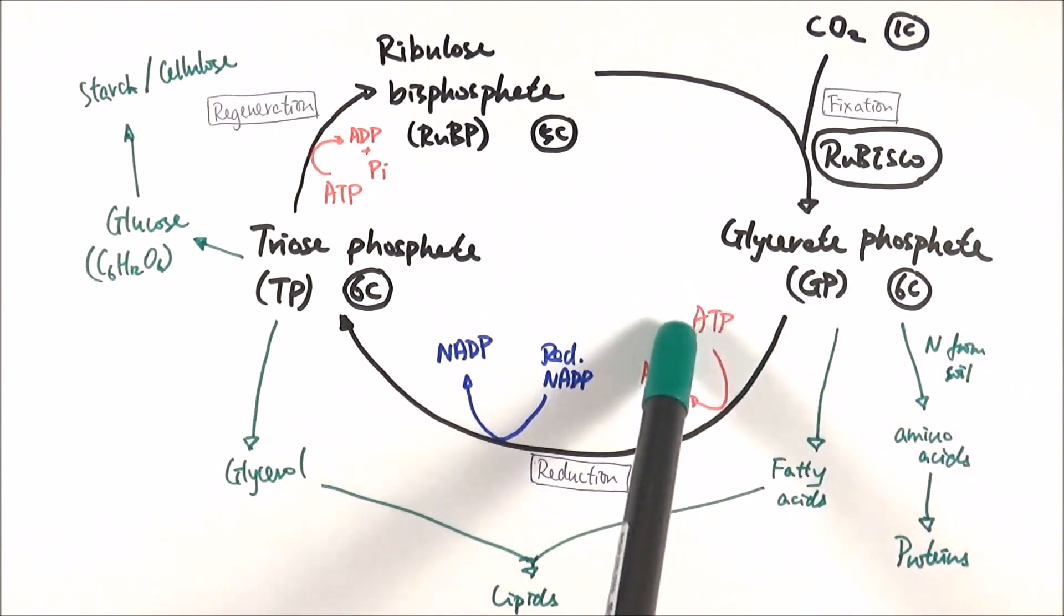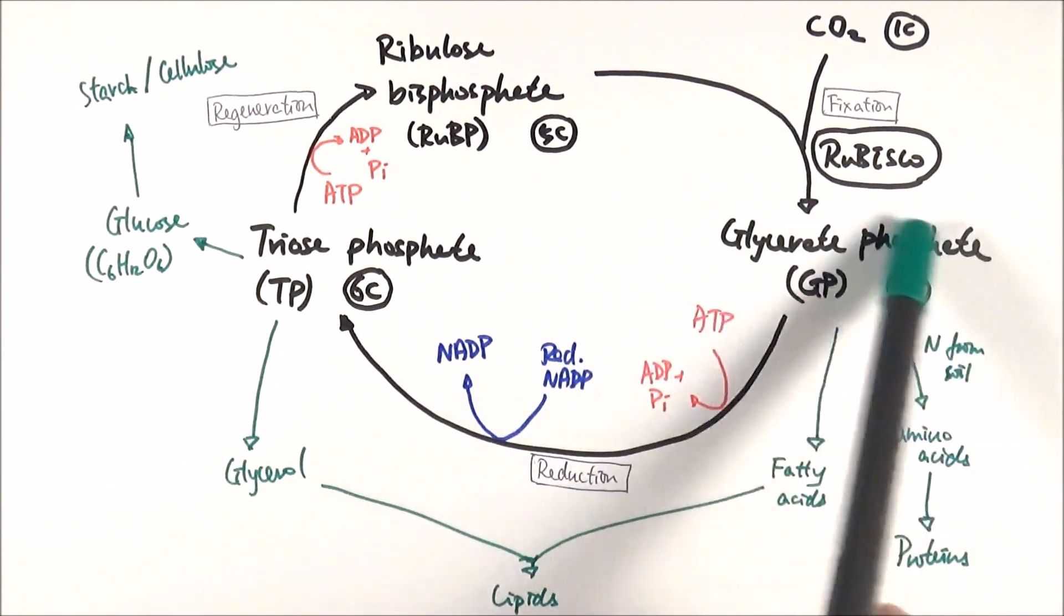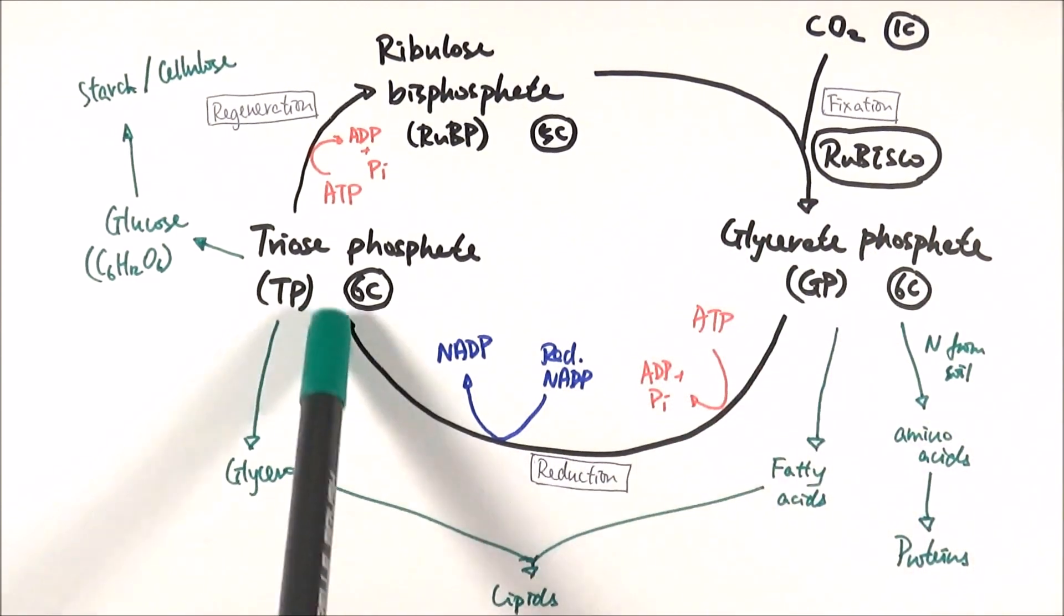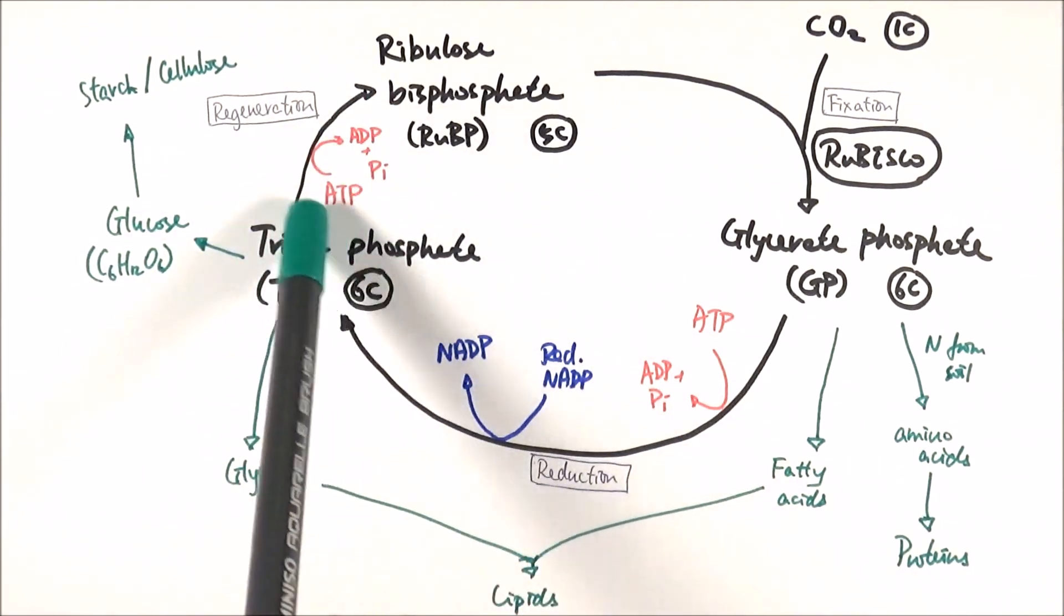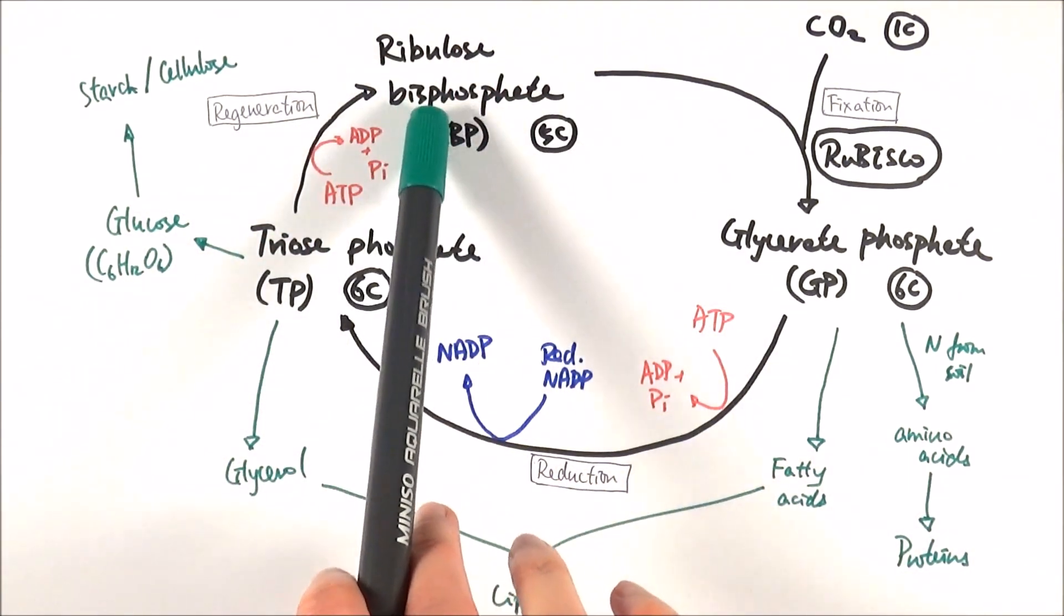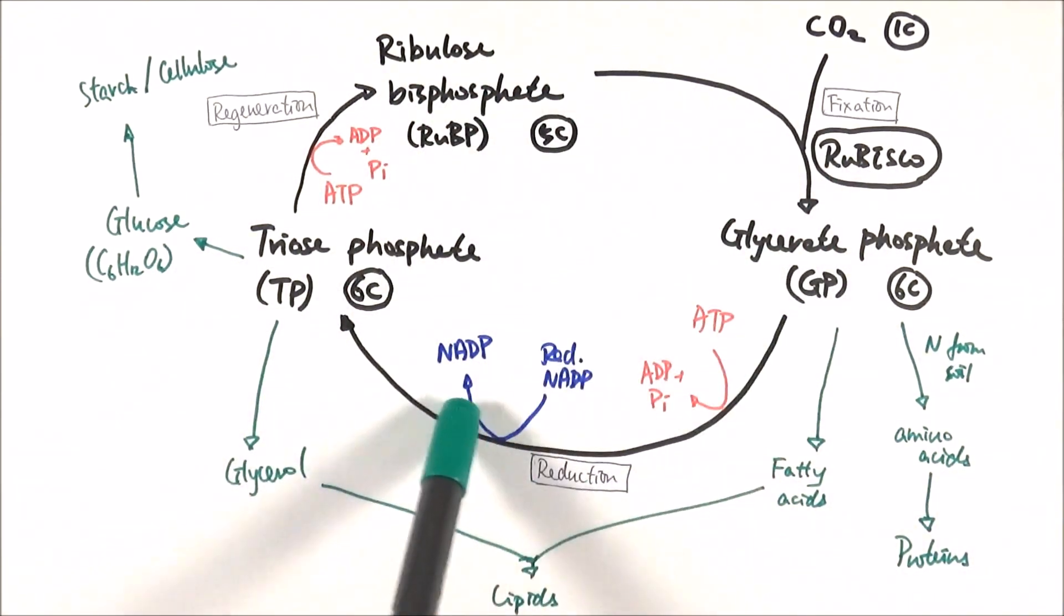Then ATP provides energy and reduced NADP donates its proton to reduce glycerate phosphate to become triose phosphate. Then triose phosphate is provided with energy to regenerate into ribulose bisphosphate and which then continues on with the cycle.